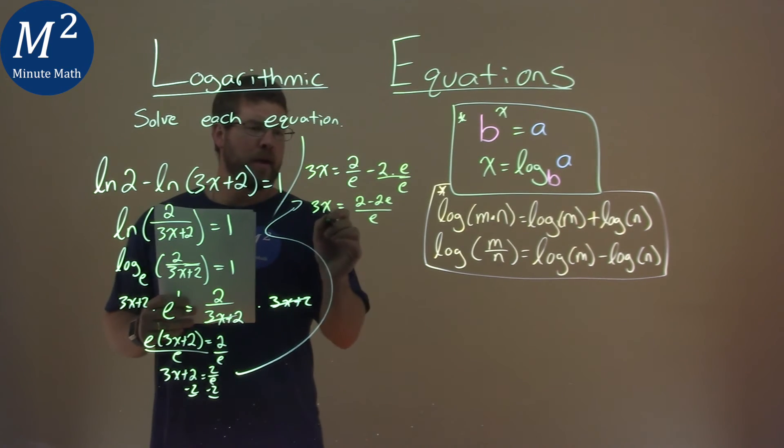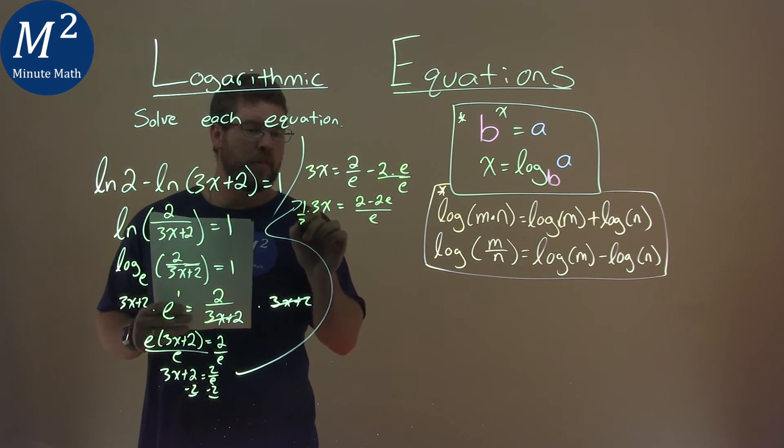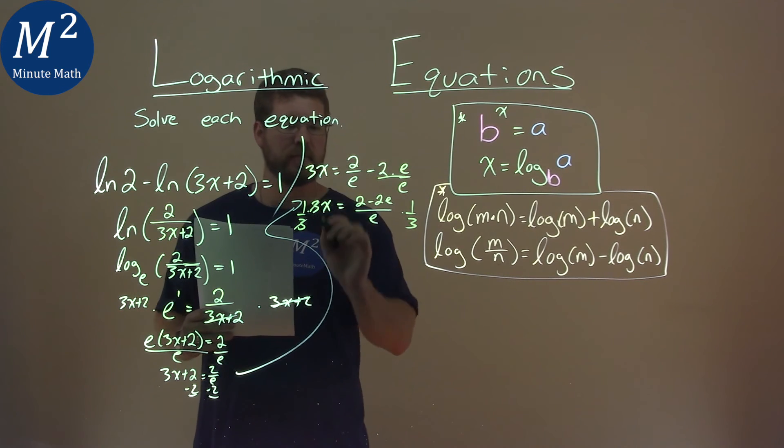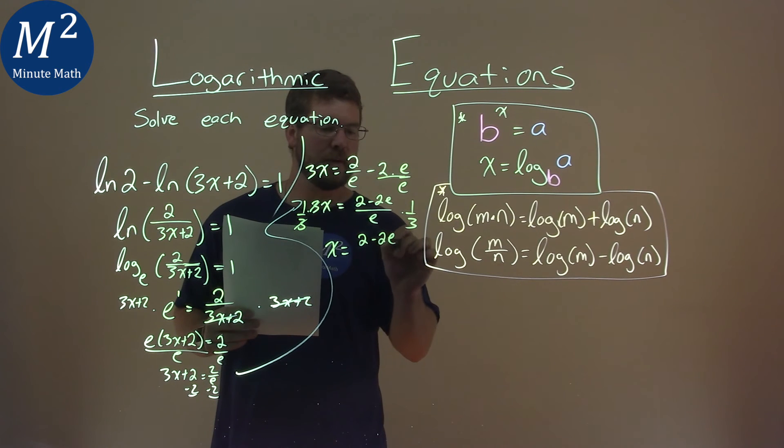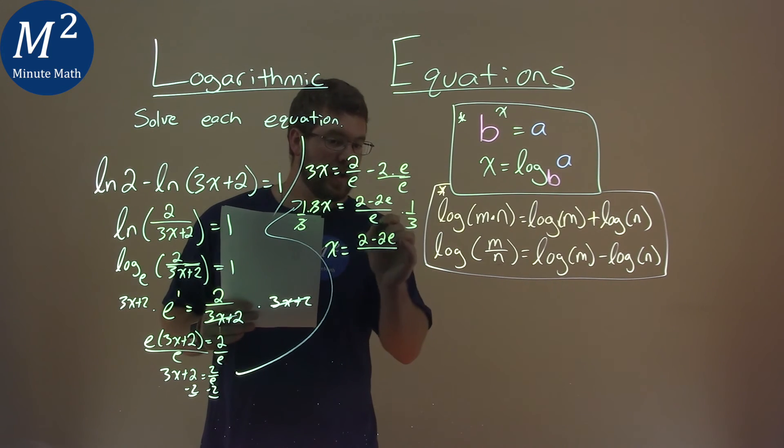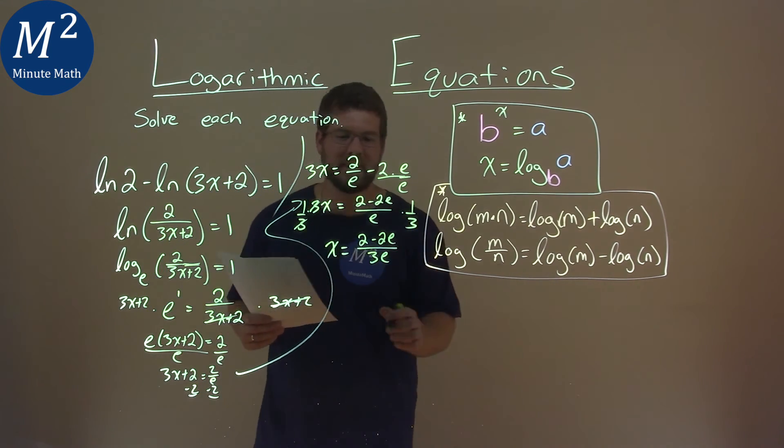We're going to get the 3 over to the right hand side, so I'm going to multiply this by a 1/3 to both sides. That cancels the 3, x is by itself. We have a 2 minus 2e still in the numerator and e times 3 is a 3e.